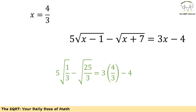For x equals 4/3: x minus 1 is 1/3 and x plus 7 is 25/3. We have 5 times radical(1/3) minus radical(25/3) equals 3 times (4/3) minus 4. The right-hand side: 3 times 4/3 is 4, and 4 minus 4 is 0. For the left-hand side, radical(25/3) equals 5 times radical(1/3), so 5 radical(1/3) minus 5 radical(1/3) is indeed 0. So x equals 4/3 is also valid.